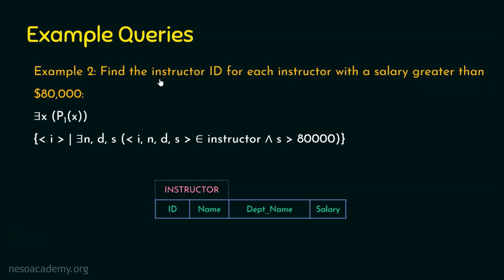I'm going to create domain variable i for instructor id and use there-exists for the remaining variables. The reason is that we retrieve only one column, so the other domain variables are mentioned under there-exists. So we retrieve i such that there-exist n for name, d for department name, and s for salary — remember all four domain variables must belong to the instructor relation — and the condition is that s, the salary domain variable, should be greater than eighty thousand. Here is the answer for example number two.